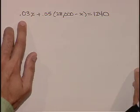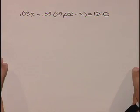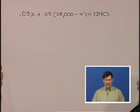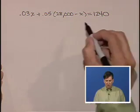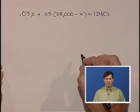Now we'll write that as an equation. We have 0.03X, which is the interest from the amount of money that's at 3%, and we have 0.05 times 28,000 minus X as the interest from the account that's at 5%. When we add those two amounts together, we should get the total interest, which is $1,240.